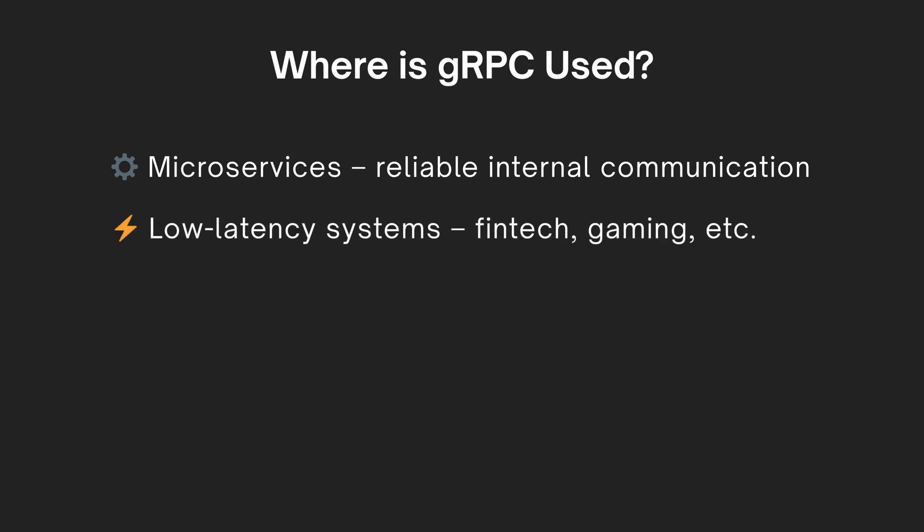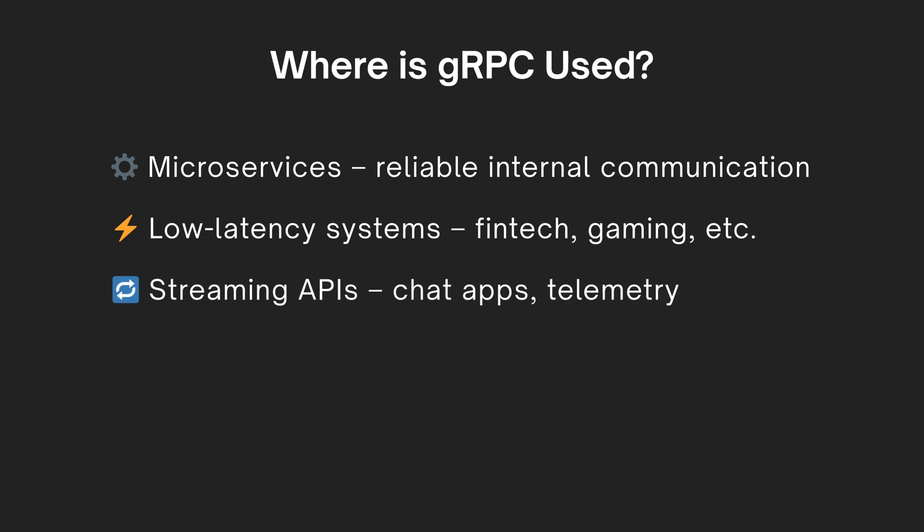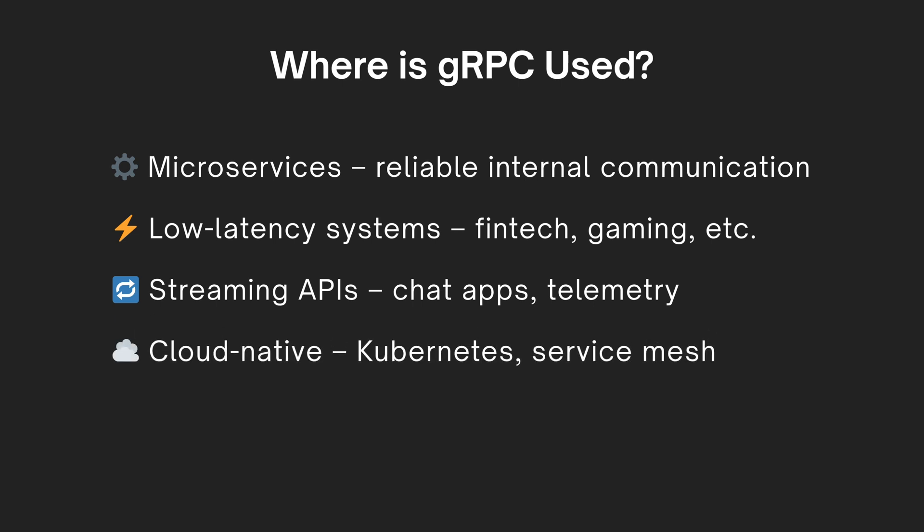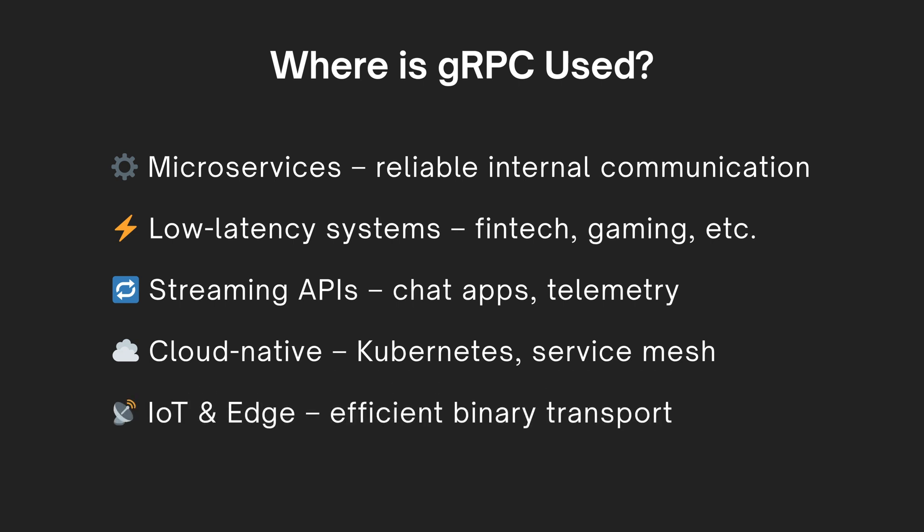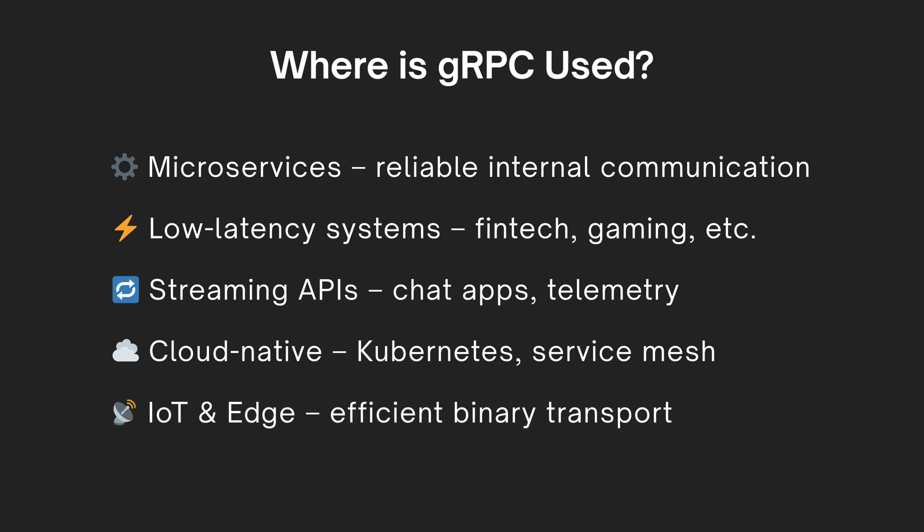Low latency systems — think stock trading platforms, multiplayer games, or real-time messaging apps where every millisecond counts. Streaming APIs like live chat, video conferencing, or IoT telemetry work great with gRPC's built-in support for streaming. Cloud-native platforms like Kubernetes and service meshes use gRPC under the hood to manage and route traffic efficiently. Finally, IoT and edge devices benefit from gRPC's compact binary format and efficient communication model.